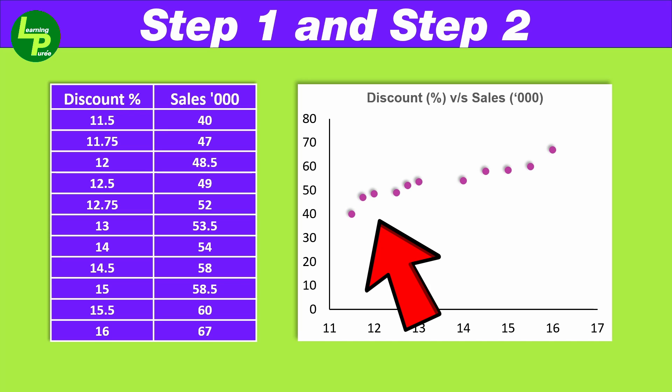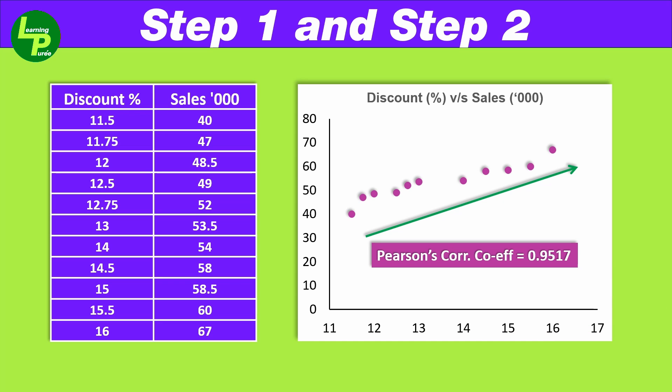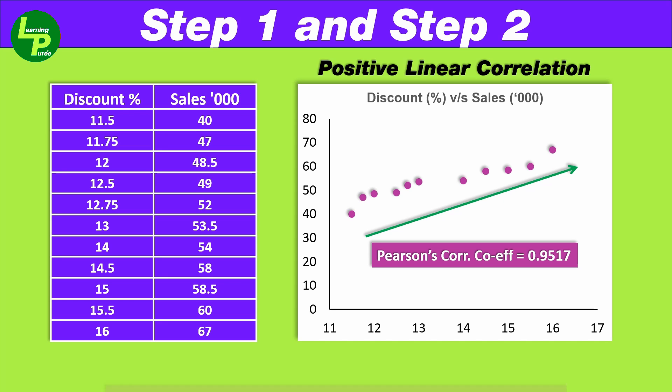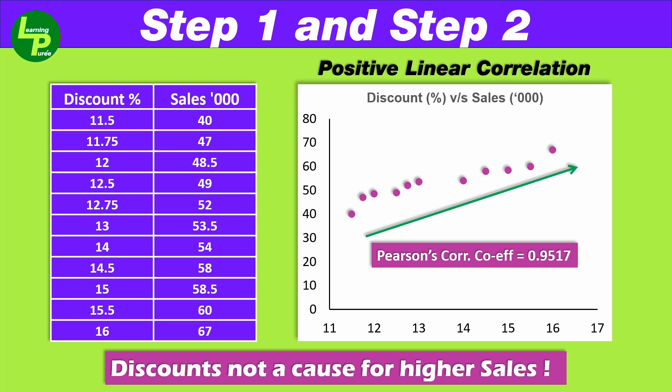We have two variables: sales in 1000 units and discount percentage offered for the product over a period. To check for any visible relationship between the two variables, we use a scatter diagram of the data points. On preliminary observation, we can say that as the discount for the product increases, the sales increase as well. We can confirm this by calculating the Pearson's correlation coefficient which is a high positive value. This value confirms that positive correlation exists in the data set.